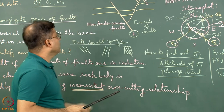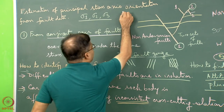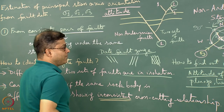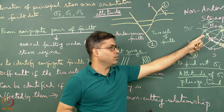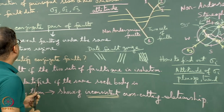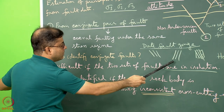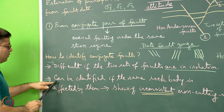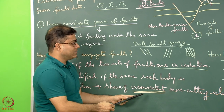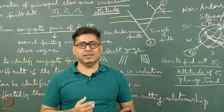To summarize, we were finding out the principal stress axis orientation — not the magnitude — and by orientation we mean the attitude, i.e., the plunge and trend. We worked with a conjugate pair of faults where the same rock body showed inconsistent cross-cutting relationships. From the stereonet plot of sigma 1, 2, and 3, we can read back the plunge and trend values. We now move to the second part.